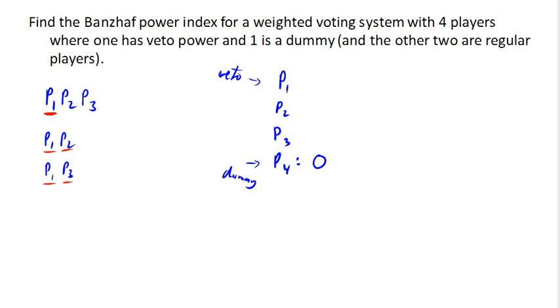So player one now is critical three times. Player two is critical once. Player three is critical once. And player four is critical zero times, for a total of five critical times.